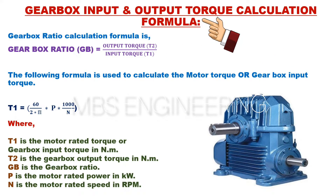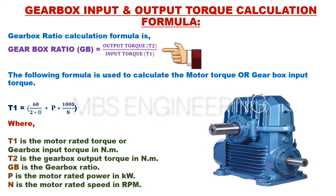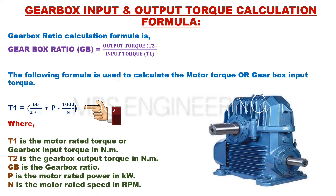We learn about how to calculate the gearbox input and output torques. The formula for calculating gearbox ratio is: Gearbox ratio GB equals output torque T2 divided by input torque T1. To calculate the motor torque or gearbox input torque, use the following formula: Input torque T1 equals 60 × P × 1000, divided by 2 × π × N.